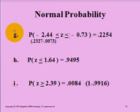Problem G is a problem of finding the probability that Z is between two values. We are going to take the value of negative 0.73 and subtract from it the value of negative 2.44.